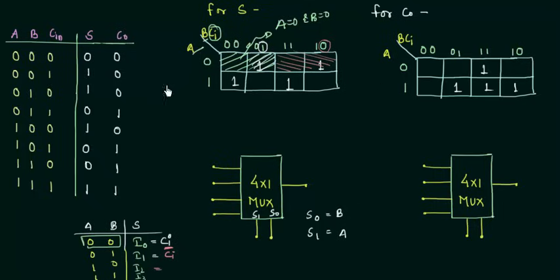For the third case when A=1 and B=0: A=1 covers the entire bottom row, and B=0 covers the first two columns — the yellow shaded portion. In this region there is a 1, and the value of Cin for that cell is 0. So I2 = Cin complement.